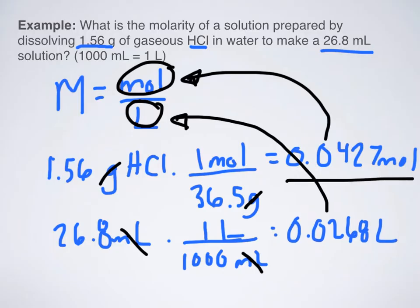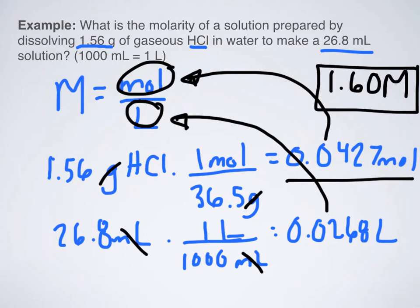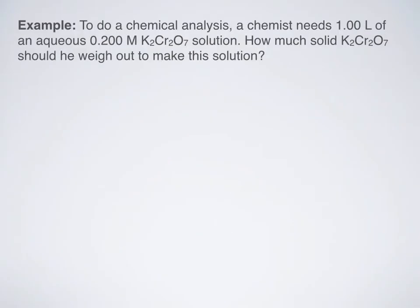So take 0.0427 moles and divide it by 0.0268 liters, and that will give you your molarity. And what does our molarity end up being? It ends up being about 1.60, and that would be the molarity of my solution, which makes sense because I'm using a tiny amount of HCl in a tiny amount of liquid, and so a molarity of about 1.60 moles per liter isn't exactly that surprising. Let's take a look at the next example.